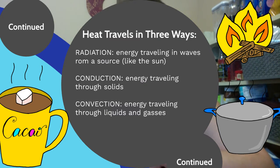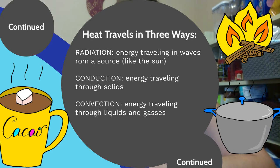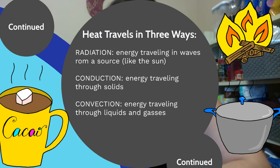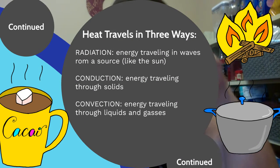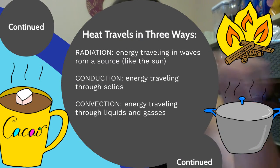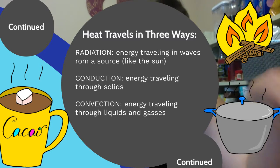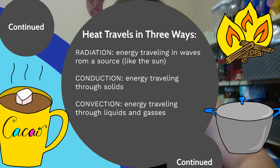Finally, there's convection. This means that energy is traveling through liquids and gases, and this is the kind that we're going to focus on the most today. This is like when you have hot cocoa and you put it in a glass — if you put a marshmallow in it, that heat will slowly travel to the marshmallow through the liquid.